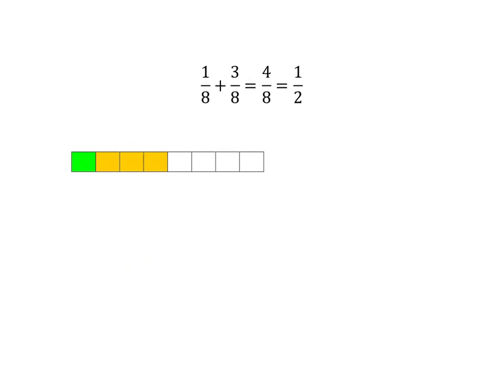Your answer should be something like this. 1 eighth plus 3 eighths. Here you've got 1 eighth. There you've got the 3 eighths. Put them all together and you get 1, 2, 3, 4 of the eighths. 4 eighths is just the same again this time as 1 half. So we can write it that way too.